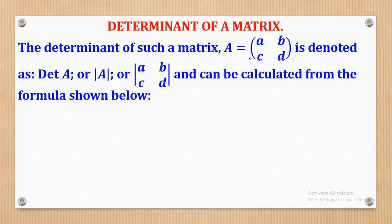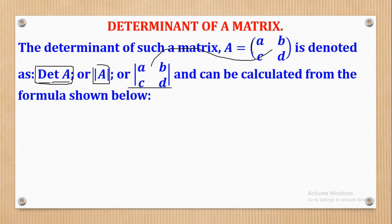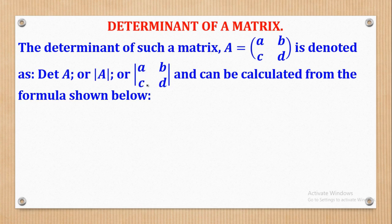The Determinant of a Matrix A, which is a 2x2 Matrix with entries A, B, C, D, is denoted in three ways. You can say Det(A); when you see two bars these mean magnitude, and the magnitude of a matrix is what we call a Determinant. Or you can write the matrix entries between straight lines — those are the three ways the Determinant of a Matrix A, B, C, D can be expressed.